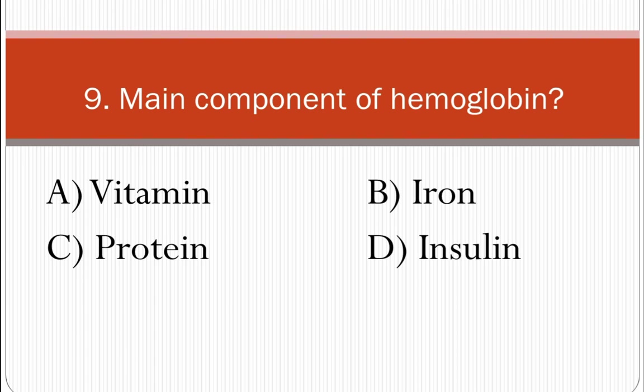The options for the main component of hemoglobin are Vitamin, Iron, Protein, or Insulin. The main component of hemoglobin is Iron.